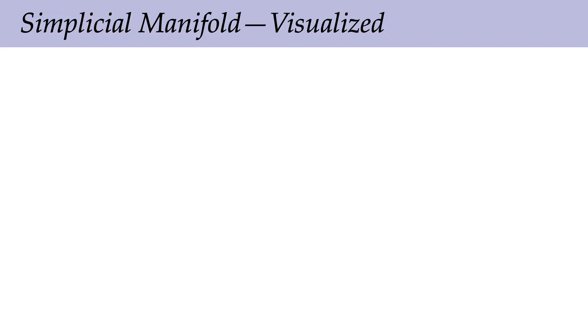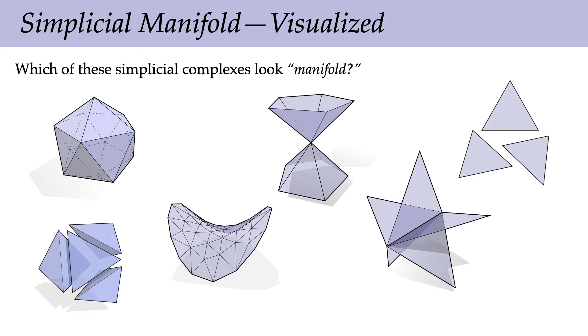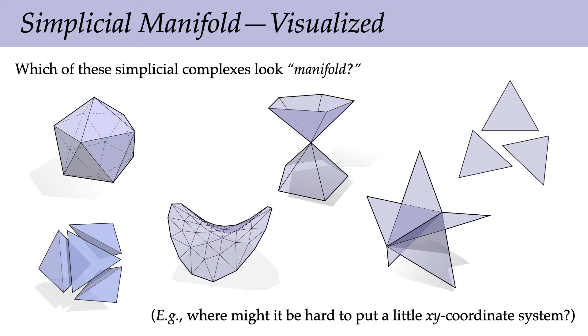Let's try to understand this in a little more detail from the simplicial point of view. Looking at some meshes — some simplicial complexes — which of these look manifold? I have an icosahedron, a saddle shape, an hourglass shape, three disconnected triangles, a star made of five triangles, and three disconnected tetrahedra. Where might it be difficult to put a little coordinate system? Things don't have to be flat; I just need to be able to draw grid lines in two distinct directions. The hourglass shape in the middle is a clear example — if I try to draw a coordinate system around the point in the middle, I'm really out of luck.